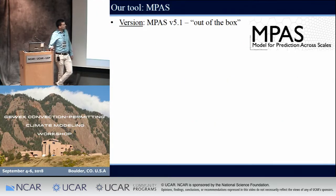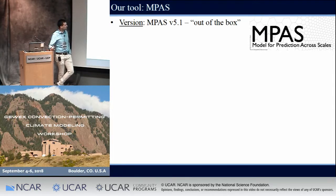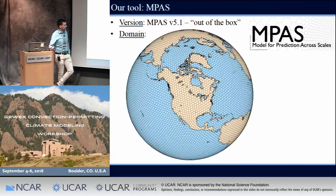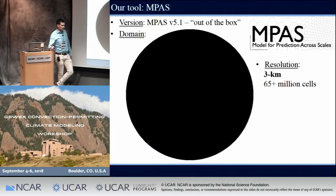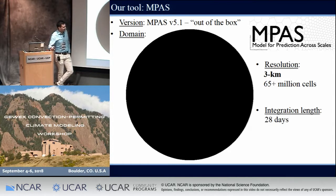Our tool, like a lot of other people in this session, is MPAS. We're using version 5.1, basically right out of the box. While it does have variable resolution capabilities, we decided to go with a uniform mesh — except this mesh is at 120-kilometer resolution, and we've gone down to 3-kilometer resolution, which looks like this when you plot that same map. That's over 65 million cells in the horizontal, so it's quite a pain to work with.